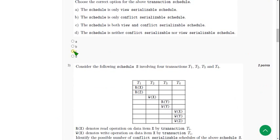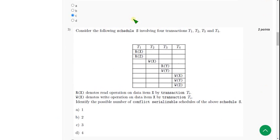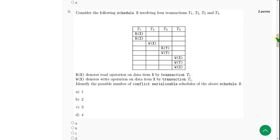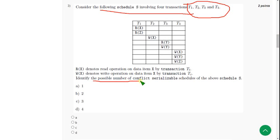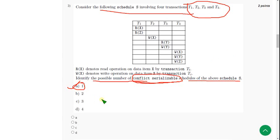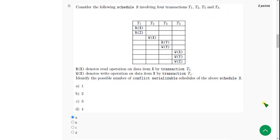Let's move on to the third question. Consider schedule S involving four transactions T1 to T4. Identify the possible number of conflict serializable schedules of the above schedule S. The probable answer is Option A: one. Mark the first option and let's move on to the fourth question.